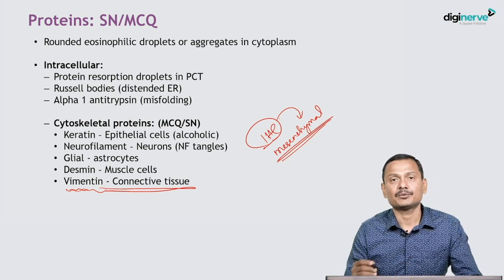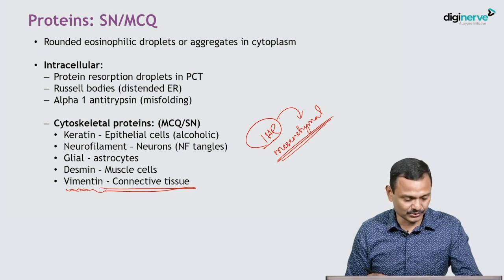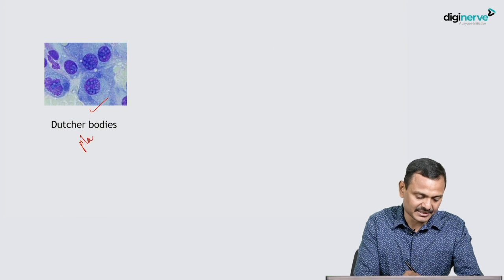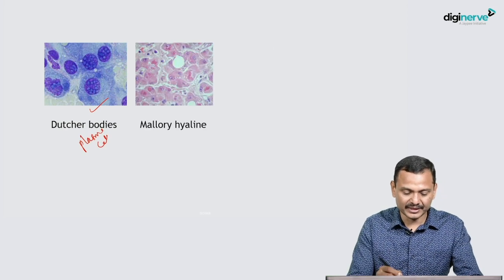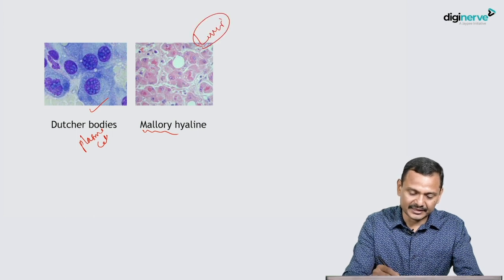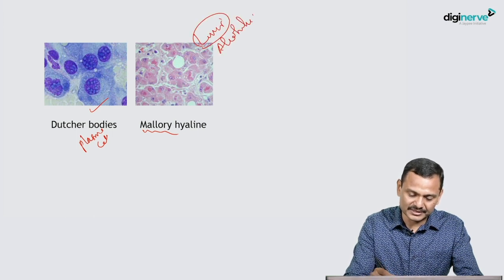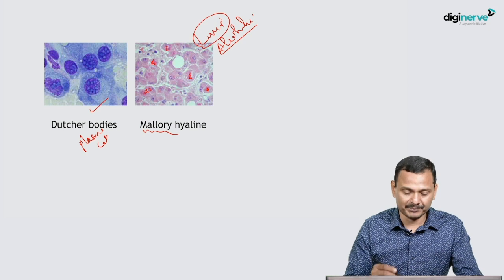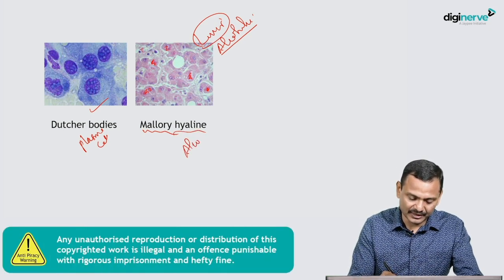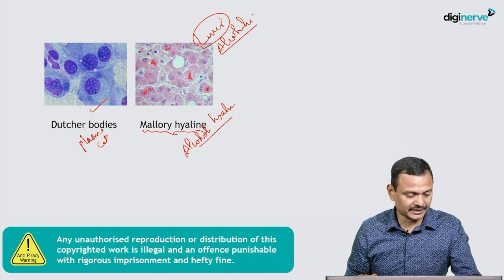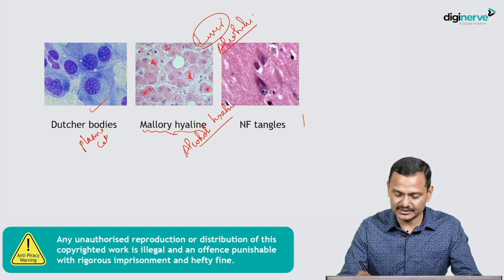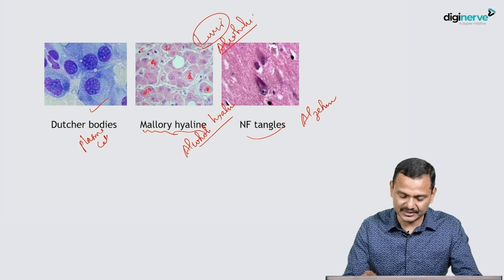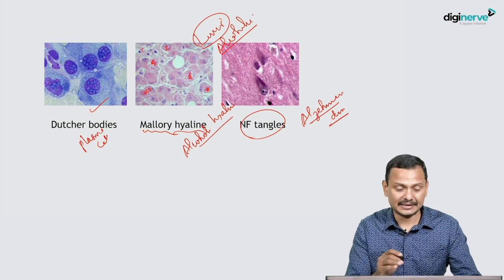Now let's look at some examples. Dutcher bodies in plasma cells have already been explained. Then comes Mallory hyaline on liver biopsy — in alcoholics, there is deposit of keratin in the cytoplasm of hepatocytes with an eosinophilic appearance, called Mallory hyaline or alcoholic hyaline. Then comes neurofibrillary tangles, seen in Alzheimer's disease.